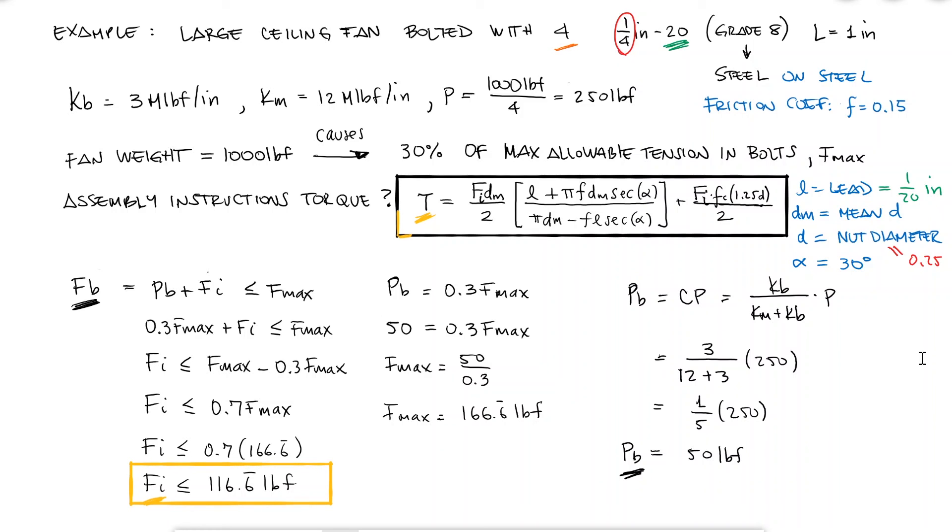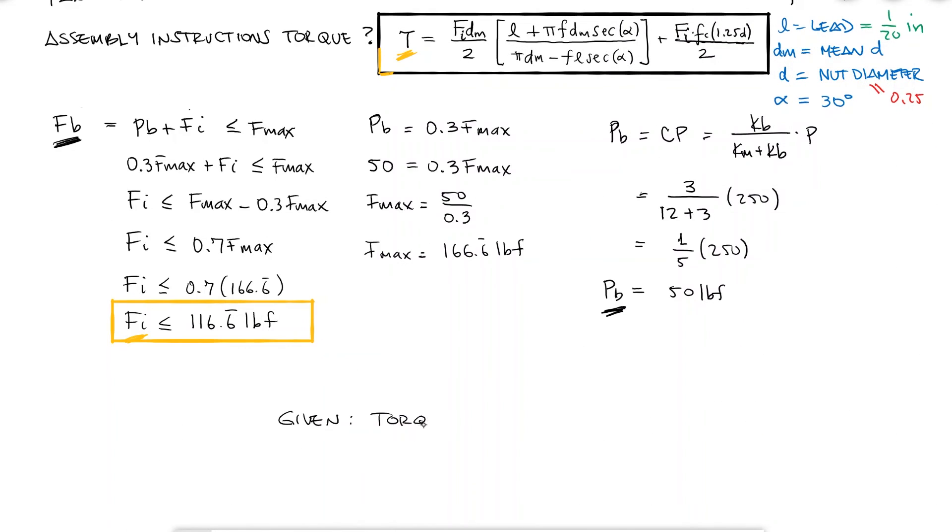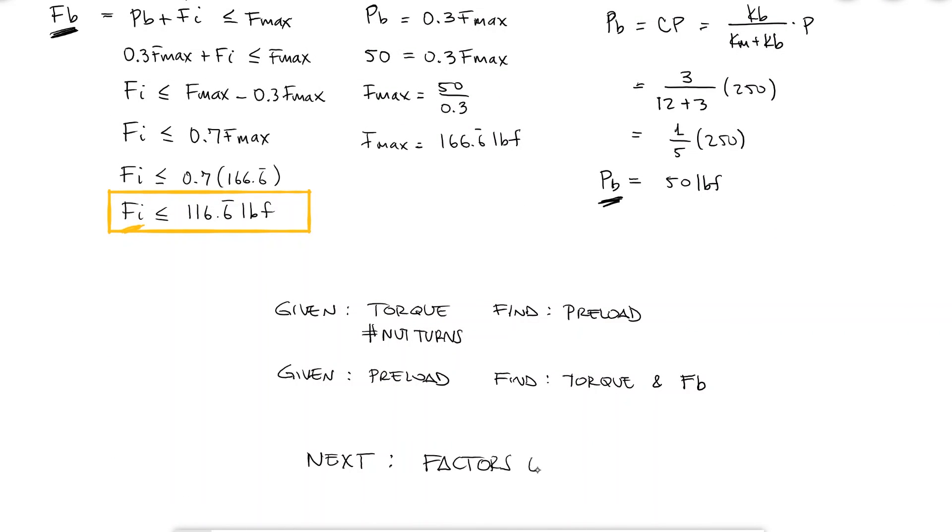To see other example situations where you are either given a torque or a number of nut turns to find the preload, or given the preload to find the torque that you should recommend for the assembly of the system you're designing, together with the needed calculations for bolt tension loads similar to this one, make sure to check out the links in the description below. In the next video, we will develop some equations that will allow us to estimate factors of safety, and we will solve an example exercise that encompasses every aspect of fastener calculations we've studied so far.